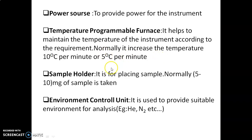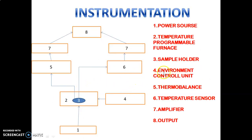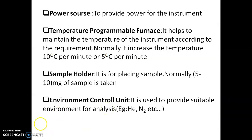The third part is the sample holder, which holds the sample. Normally we take five to ten milligrams of sample. The fourth component is the environment controller unit, which controls the environment. Some experiments are carried out in an inert atmosphere, in the presence of oxygen, or in air. The environment controller unit provides the suitable environment required for analysis — helium, neon, or whatever is needed.